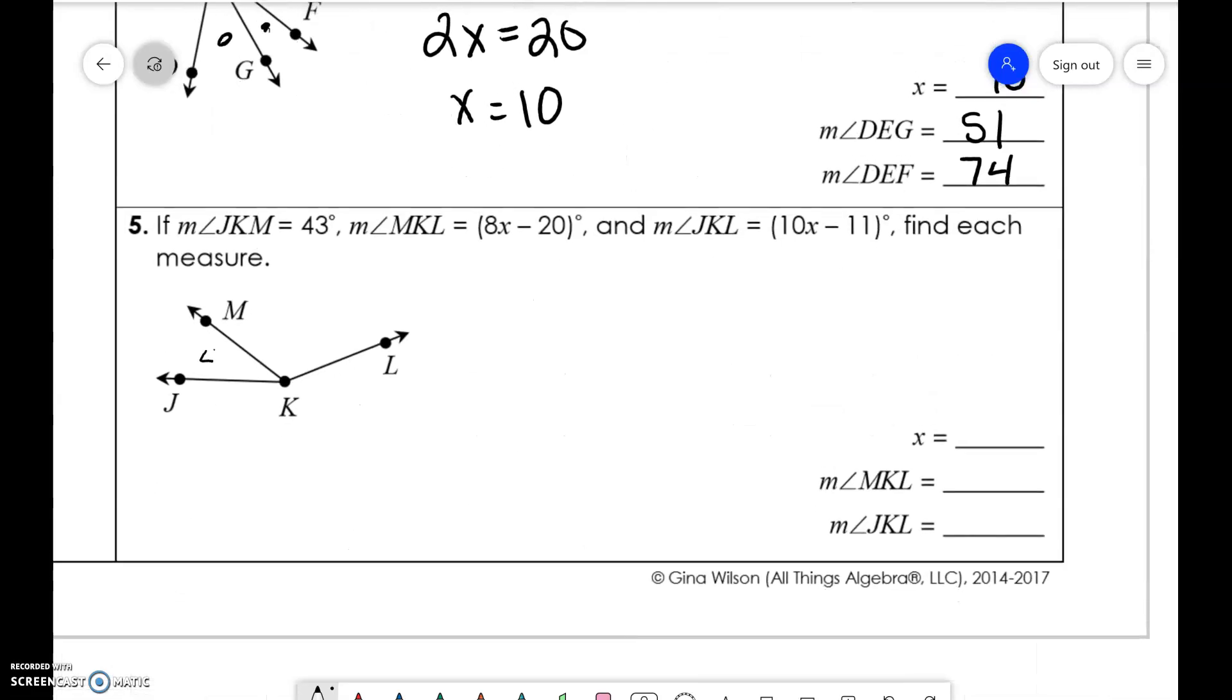JKM is 43. MKL is 8x minus 20. And the whole angle is 10x minus 11. So 10x minus 11 is equal to 43 plus 8x minus 20. And then we're solving that for x.